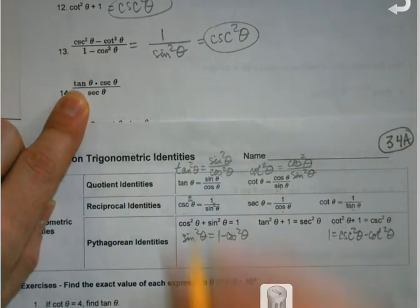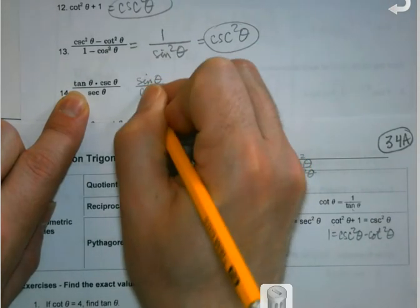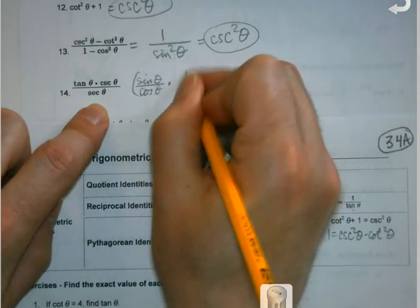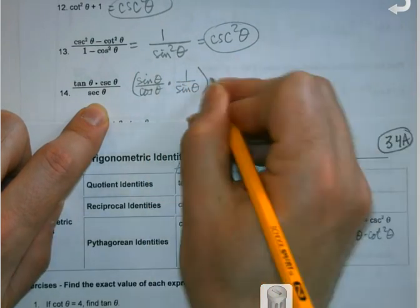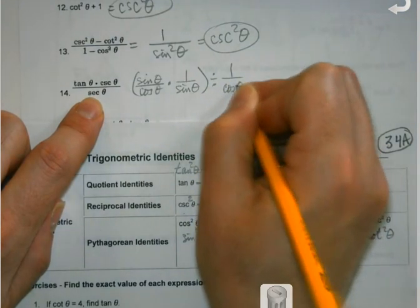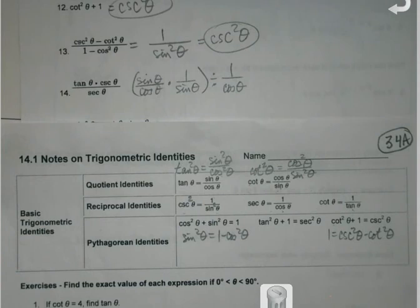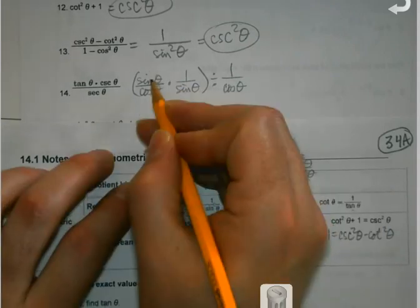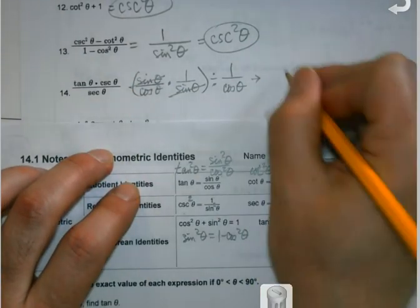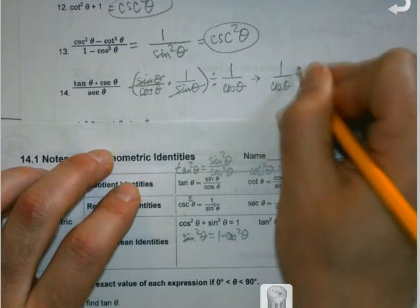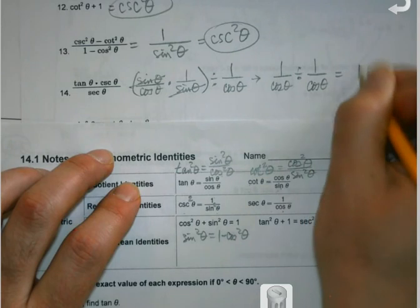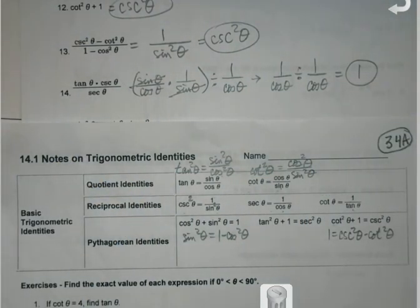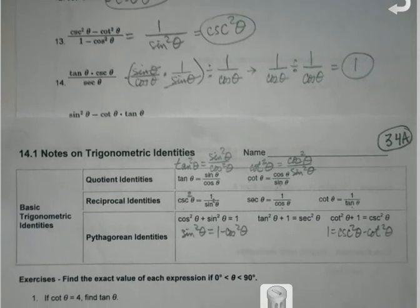Piece by piece. So tangent is sine over cosine. Cosecant is one over sine and secant is one over cosine. The sines cancel out. I've got one over cosine divided by one over cosine. Well I know what I get when I divide something by itself. I get one. So I can start to see how this might not be the worst thing ever.